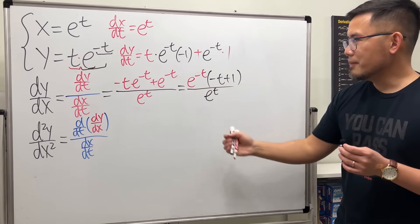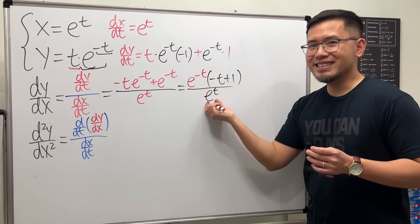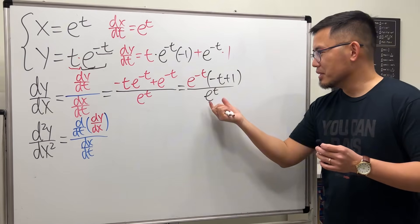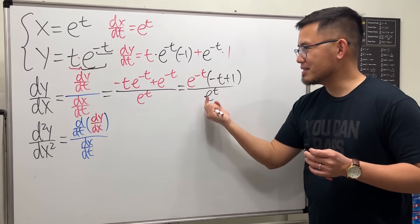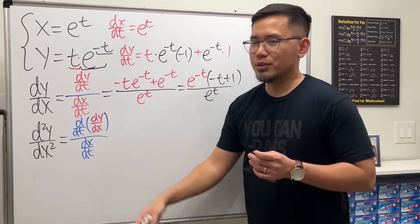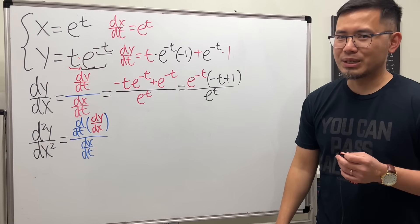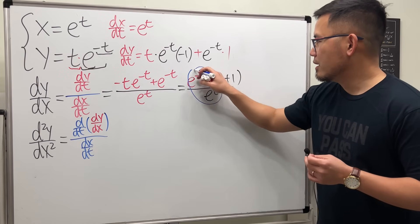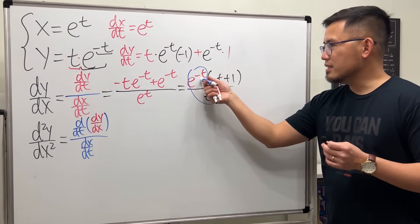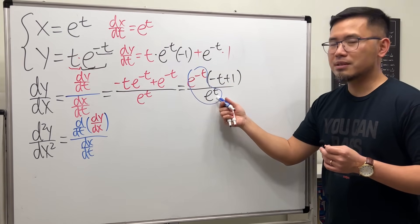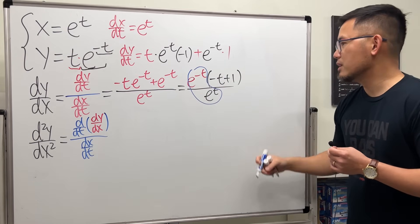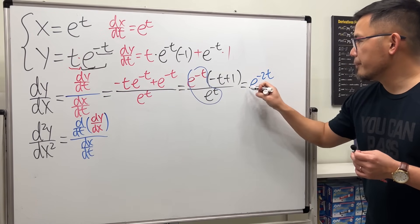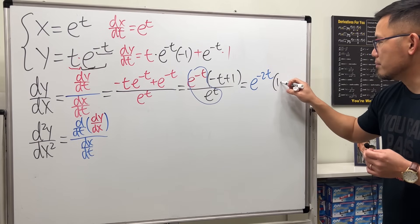Now let me simplify by factoring out e to the negative t from those two terms. We get e to the negative t times (negative t plus 1), over e to the t. You have two choices: bring this down and use the quotient rule, or bring this up and combine the exponentials using the product rule. I prefer the product rule. Since they have the same base, subtract the exponents: negative t minus t is negative 2t. So we get e to the negative 2t times (1 minus t). This is the final result for dy/dx.